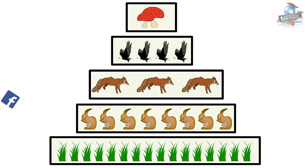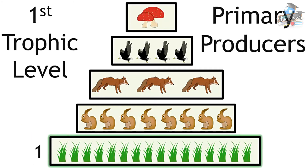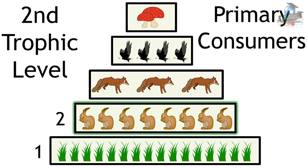Now let's look at the trophic levels in this community. The first trophic level is the primary producers, the grass. Level 2 is the primary consumers, which is the rabbits.